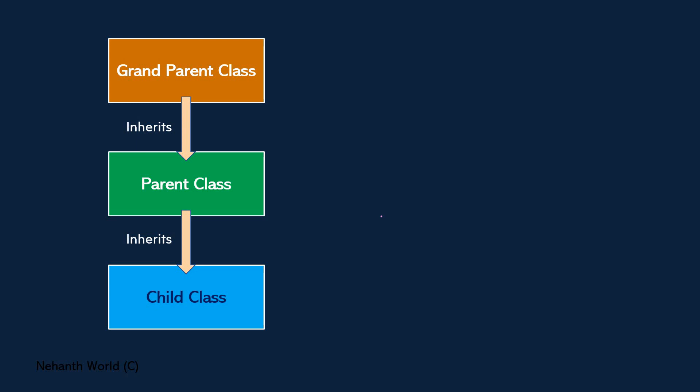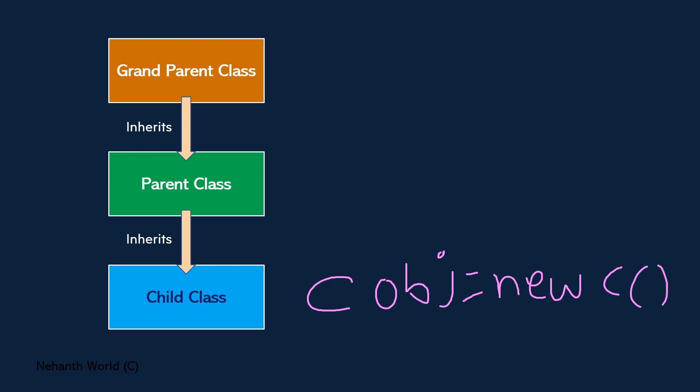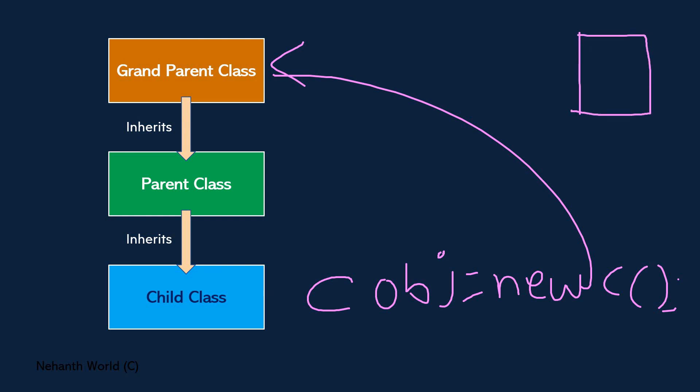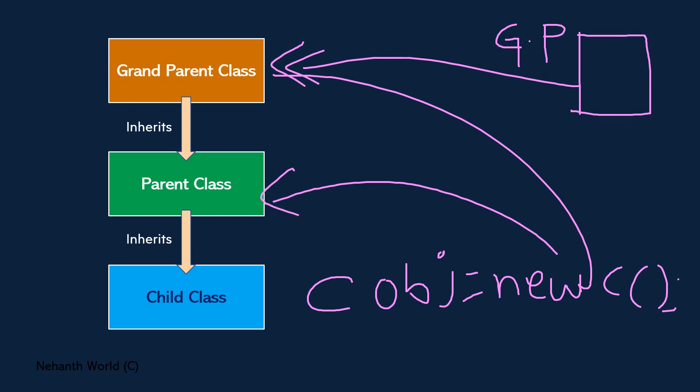This is two-level inheritance. Now let us look at three-level inheritance. Consider three classes: a grandparent class, a parent class inheriting from grandparent, and a child class inheriting from parent. When you try to create an object for child — 'c obj = new child class' — it will call the top-level parent class constructor first, so the grandparent constructor is called. Memory will be created for the grandparent. After that, it will invoke the second parent's default constructor, and memory will be created for that parent class.